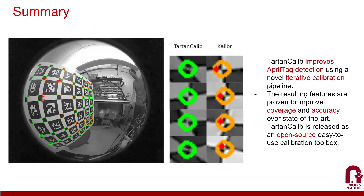In summary, Tartan Calib improves April tag detection using a novel iterative calibration pipeline. The resulting features are proven to improve coverage and accuracy over the state-of-the-art. Tartan Calib is released as an open-source and easy-to-use calibration toolbox.